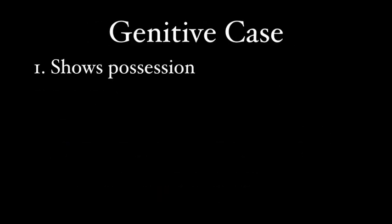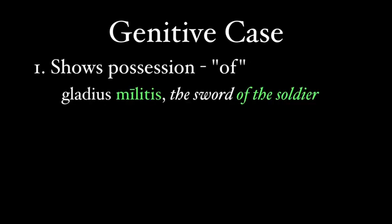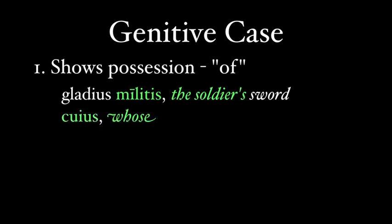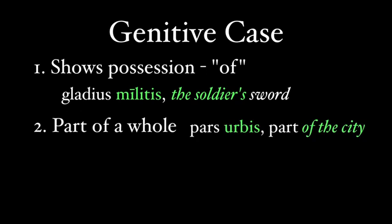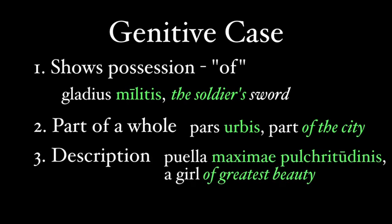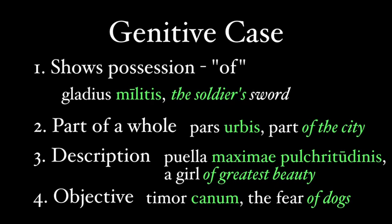The genitive case is most often used for possession, and we like to translate it with the word 'of' before the noun. So 'gladius militis' — the sword of the soldier, or the soldier's sword. We have this quasi-genitive case in English with the apostrophe-s. You can also see a relic of the genitive from Old English in the word 'whose.' The genitive can be used in other ways: 'pars urbis' means part of the city. There is also a genitive of description — 'puella maximae pulchritudinis,' the girl of greatest beauty. We can also have a genitive acting like an object to another noun: 'timor canum,' the fear of dogs. Here, dogs are the object of fear, but since timor is a noun, we put dogs into the genitive case.